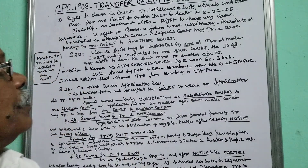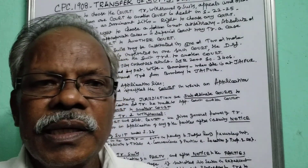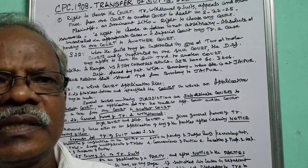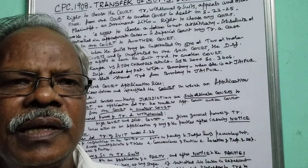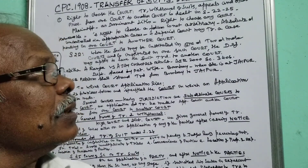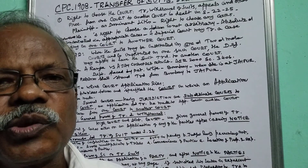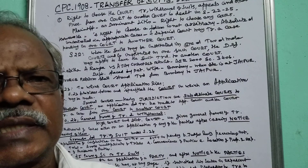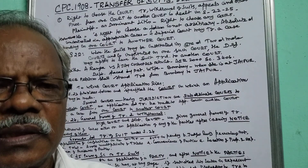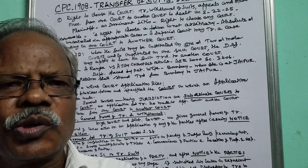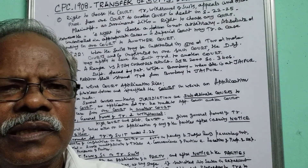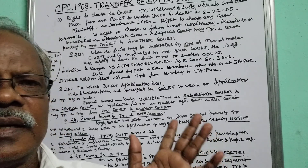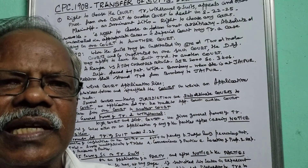Today in this video we are going to see about Civil Procedure Code 1908, and we are going to take the topic Transfer of Suits, which is dealt by sections 22 to 25. We are going to see these four sections. I will show you the 22nd section.